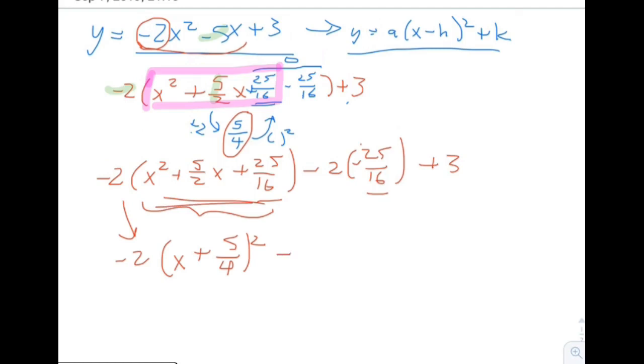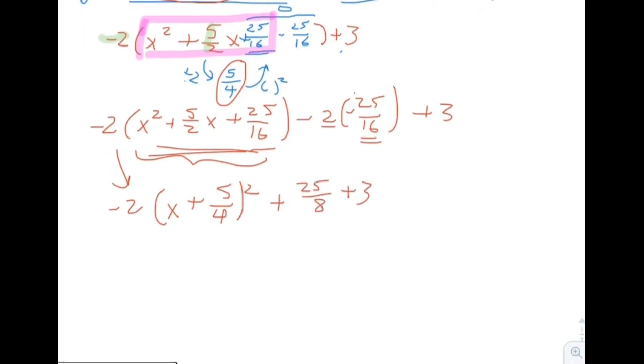Then we can go ahead and multiply it, simplify this. It's going to give us plus 25 over 8 plus 3. And now we just need to put these two together. 3 is the same thing as 24 eighths. So in the end, we end up with 49 eighths plus x plus 5 fourths squared, negative 2. So we get the same answer as we did before.